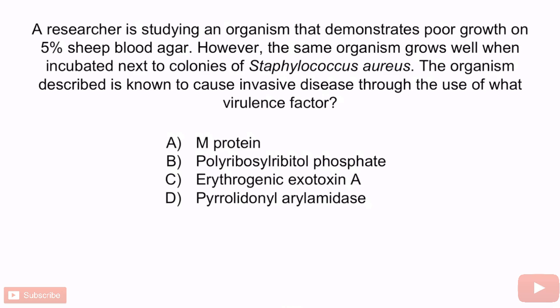Let's review with a question. A researcher is studying an organism that demonstrates poor growth on 5% sheep blood agar, but grows well when incubated next to colonies of Staphylococcus aureus. This organism causes invasive disease through the use of what virulence factor? A. M-protein. B. Polyribosylribotylphosphate. C. Erythrogenic exotoxin A. Or D. Pyrrolodonyl aurelamidase. From the question stem, the organism is Haemophilus influenzae — it grows poorly on blood agar but well next to Staph aureus, which is beta-hemolytic and provides NAD (factor 5) and hematin (factor 10). The correct answer is B, polyribosylribotylphosphate.